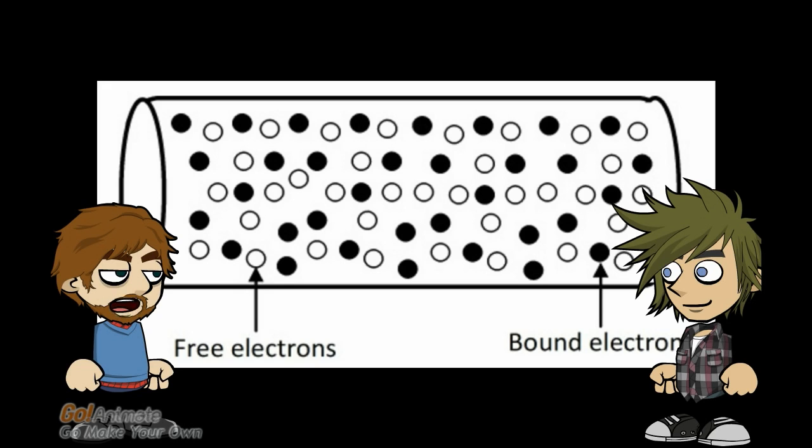The diagram shows some of the electrons inside a wire. The open circles are free to move around, but the dark circles can only vibrate in their current position. One copper atom has 29 electrons and only one or two are free to move around. It is important to keep in mind that there are many more bound electrons than free electrons.